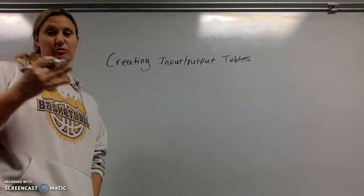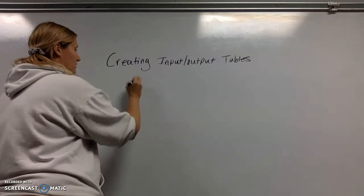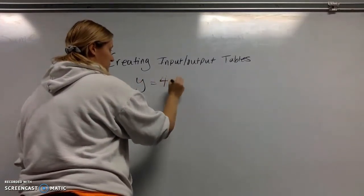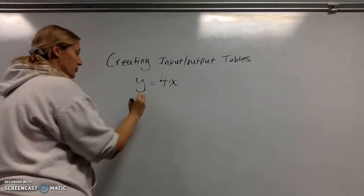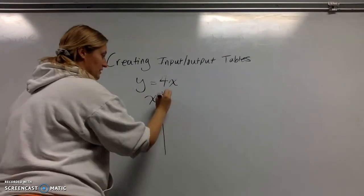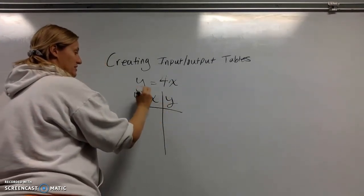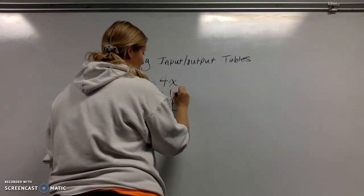So now we're going to create our input-output tables, which are those XY tables. Basically, if you are given an equation like that, a function rule, you're going to create an XY table. So this is your inputs. Some people call it an input-output table. I call it an XY, and this is our outputs.